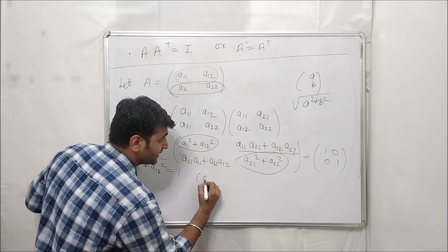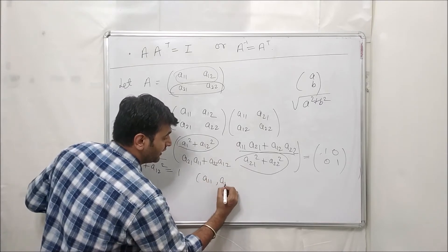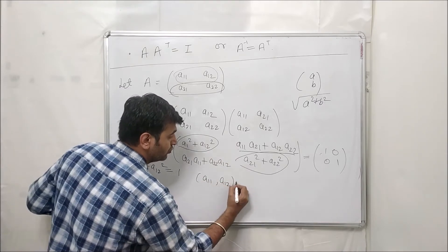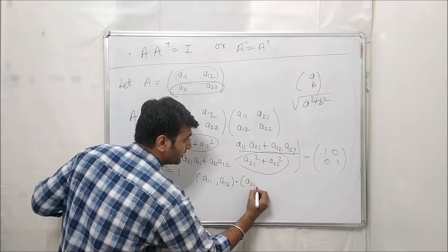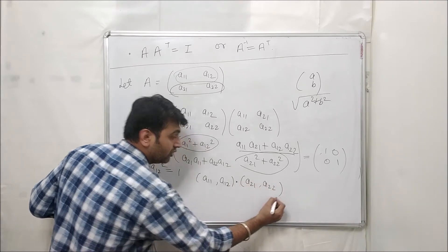Now what does the off-diagonal entry imply? If you look carefully, this entry is nothing but the dot product of (a₁₁, a₁₂) with (a₂₁, a₂₂).